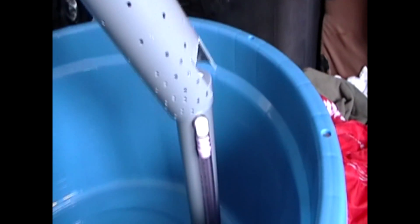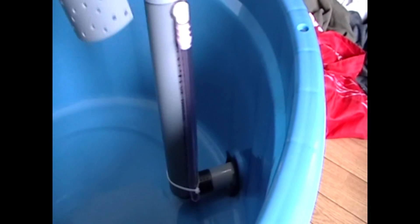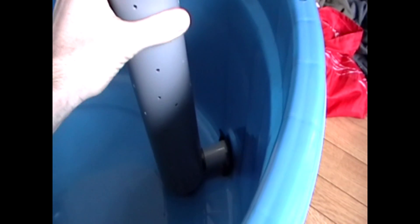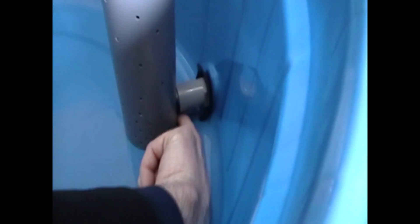Okay, the gravel guard goes on top. I cut out this section here so that it fits around here. So now the gravel guard goes all the way to the bottom. Bell siphon sits inside there.